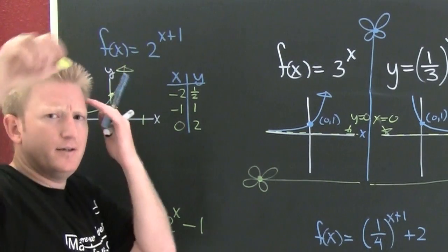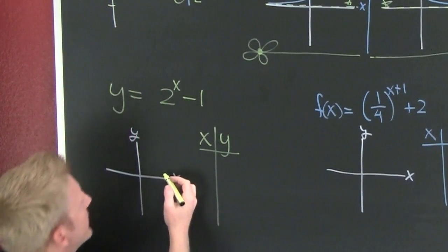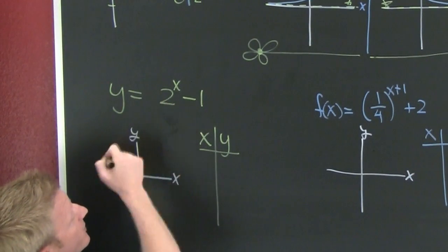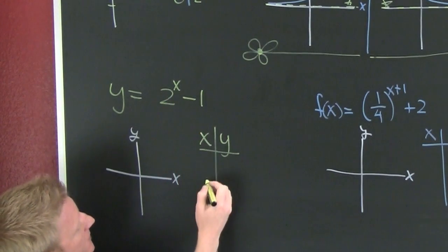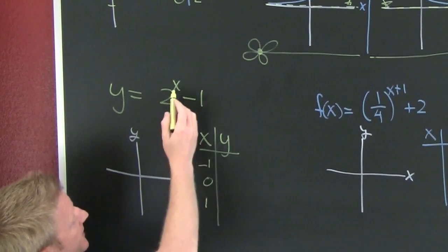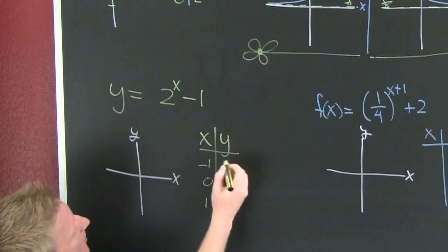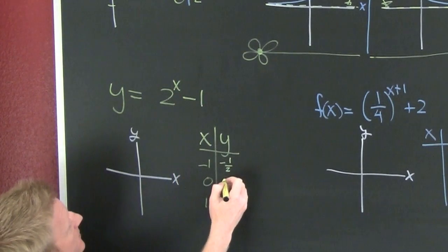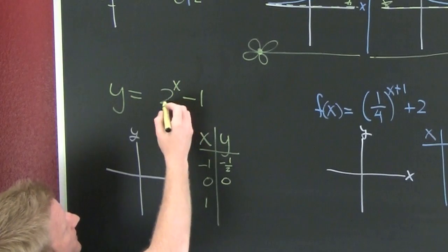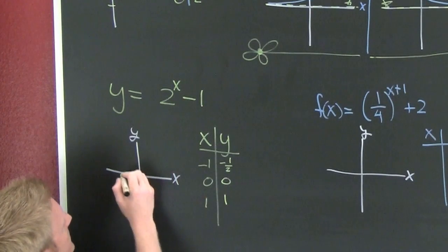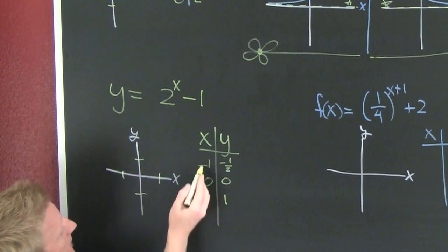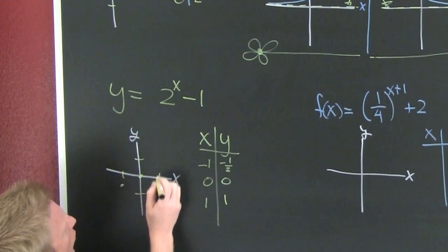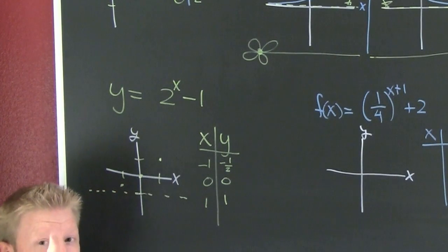For the next example, the base is again bigger than one so it's upward sloping. What makes the exponent zero? X = 0, so choose one less (X = −1) and one more (X = 1). Plugging in: at X = −1 we get one-half; at X = 0 we get one; at X = 1 we get two. We graph those points and note the asymptote, which we'll explain shortly.